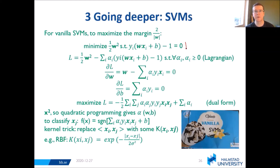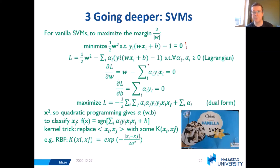We then use the Lagrangian to simplify this. We add those constraints, then take the derivative with respect to W and B. We get W equal to a summation, and we get that a certain term equals zero. We can then formulate a new equation where we're trying to maximize L equal to the dual form. We notice we have X times X, so this is a quadratic problem and we can use quadratic programming to get an answer for alpha — our Lagrangian term.